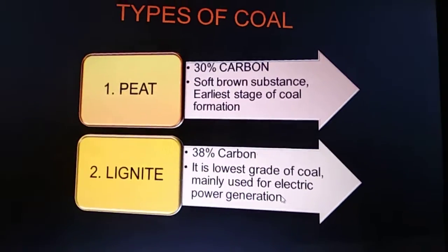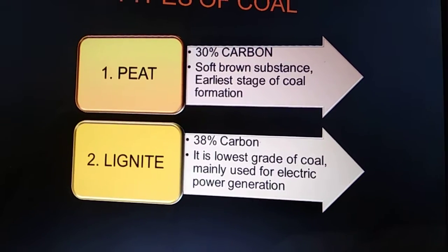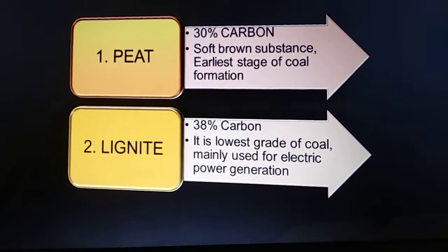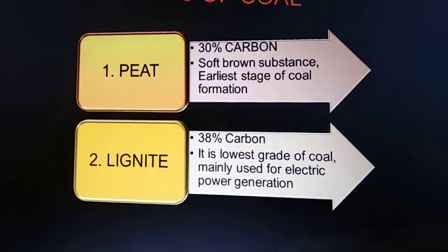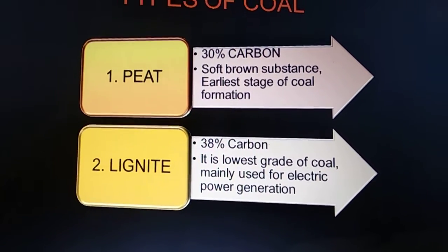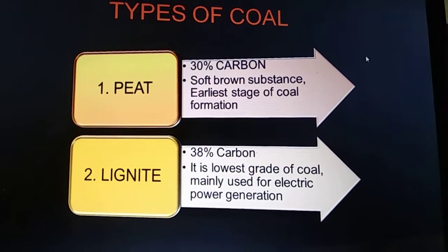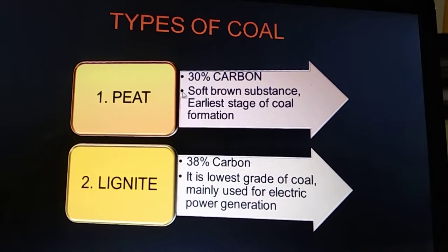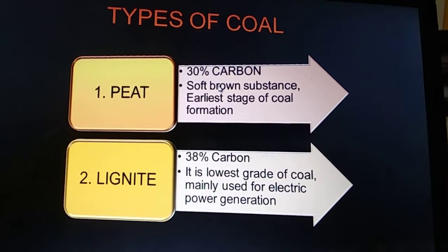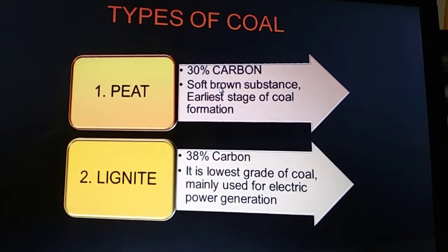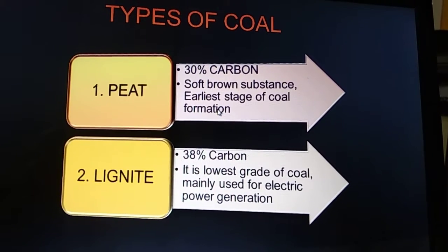These types of coal are divided into different categories on the basis of the percentage of carbon present in them. Peat has 30% carbon. It is a soft brown substance and it is the earliest stage of coal formation.